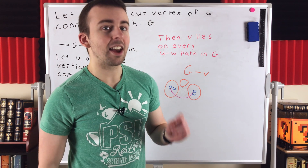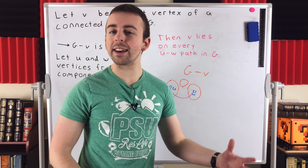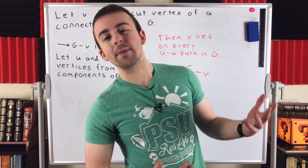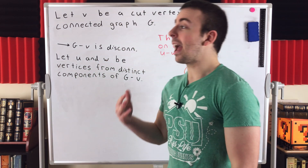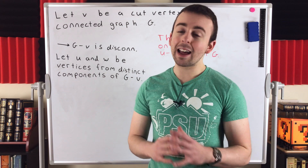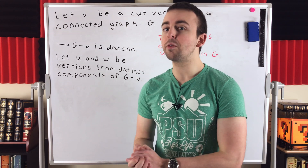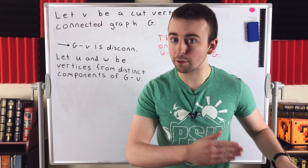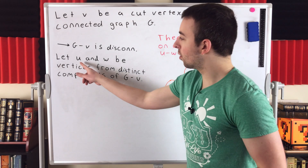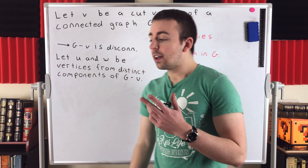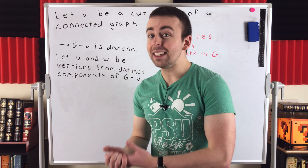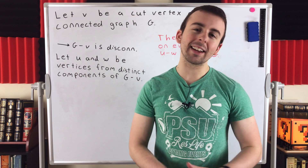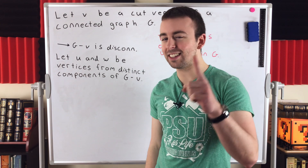This suggests a theorem that we'll prove probably in the next lesson that characterizes cut vertices — a theorem that says a vertex in a connected graph is a cut vertex if and only if there exist two vertices U and W, distinct from that cut vertex, such that V lies on every UW path. We'll prove that theorem probably in the next lesson, which will come out in two days.